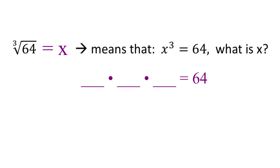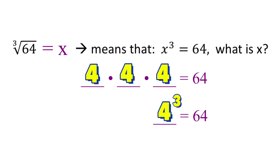That number is 4. So 4 times 4 times 4 equals 64, which means x is 4 and the exponent is 3, equal to 64. Therefore, the cube root of 64 is 4.